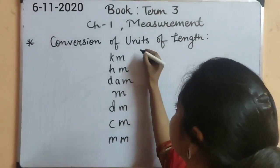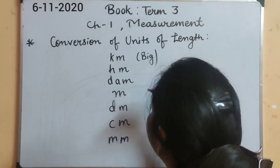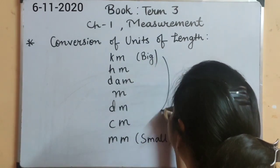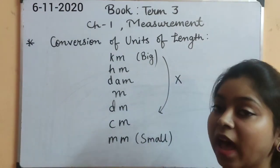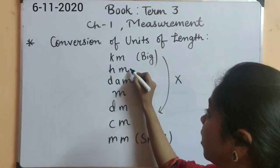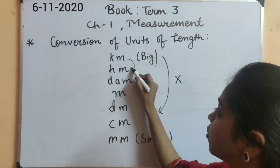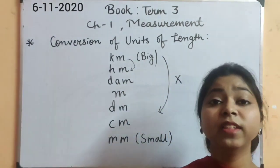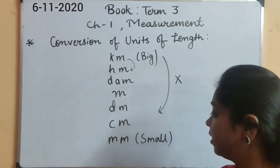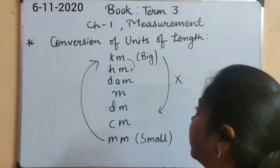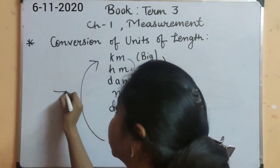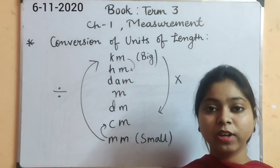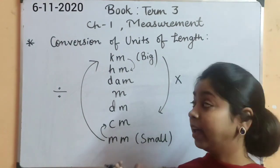As we all know, this is the biggest unit and this is the smallest unit. If we move from big to small, we will multiply according to our number of places. If we are moving one place, we multiply by ten. If we are moving two places, then by hundred. And if we move from small to big, we divide. Like if we are moving one step upward, we will divide by ten and vice versa.